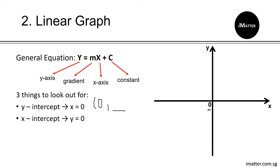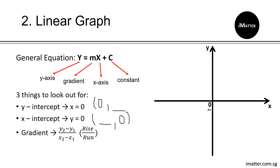Next is your x-intercept, where you substitute y equals 0 into the equation and solve for x, giving coordinates (x-value, 0). Lastly is your gradient — most of you will know the formula rise over run, or the difference of y over difference of x. A simple example is the plot of y equals x. Referencing this to the general equation, the gradient is 1 and the constant is 0, so both the y-intercept and x-intercept are at the point of origin. Using any two points on the line gives rise over run equal to 1.